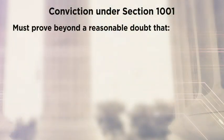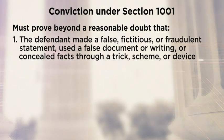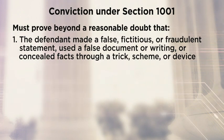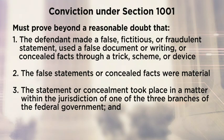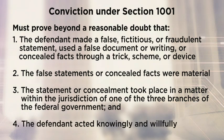To convict under Section 1001, the government must prove the following elements beyond a reasonable doubt: the defendant made a false, fictitious, or fraudulent statement; used a false document or writing; or concealed facts through a trick, scheme, or device. The false statements or concealed facts were material. The statement or concealment took place in a matter within the jurisdiction of one of the three branches of the federal government. And the defendant acted knowingly and willfully.